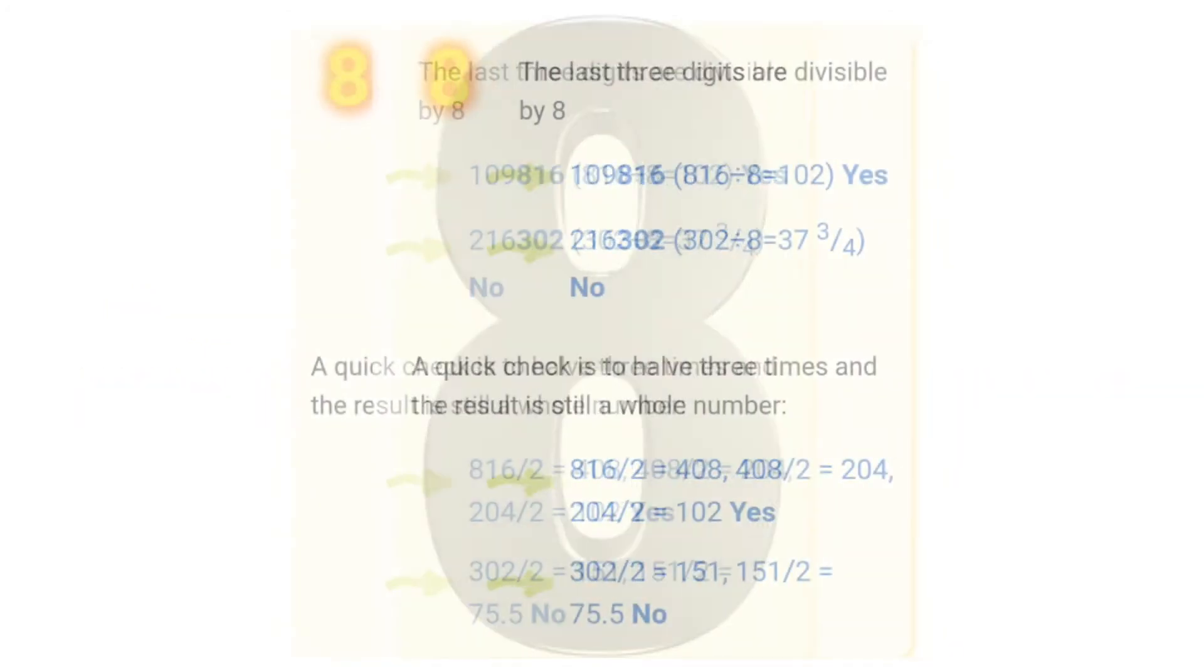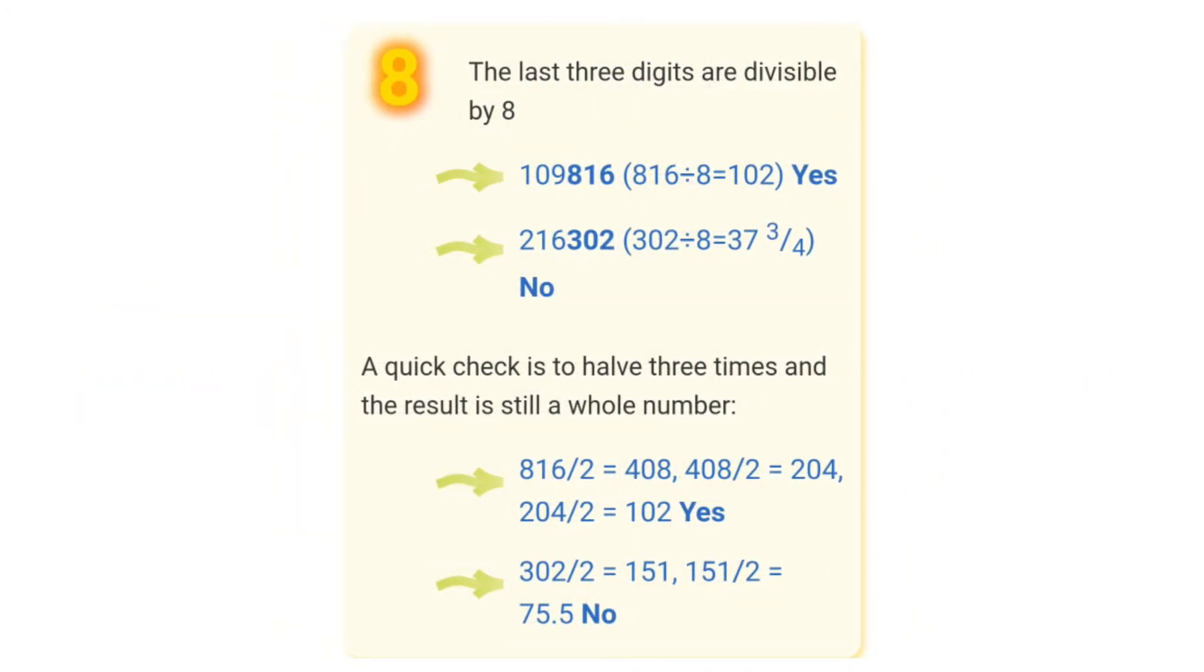Example 19,816. The number formed by last 3 digits is 816. When we divide 816 by 8, we get quotient as 102 and remainder as 0. Since 816 is divisible by 8, therefore 19,816 is also divisible by 8.